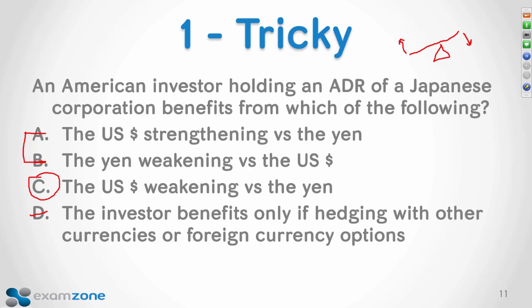More important than finding the right answer is eliminating the ones that are absolutely wrong — that's how you build confidence and raise your score. If you do that process, you know you got it right because you know A, B, and D are absolutely wrong. It's a negative act: I have enough knowledge and have done enough practice questions to say this is wrong for sure and that is wrong for sure. And D doesn't work either, so the answer is C.